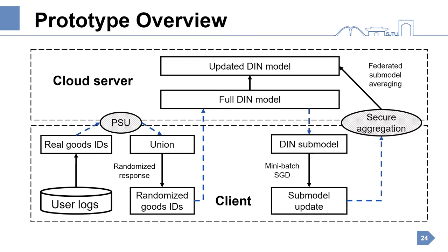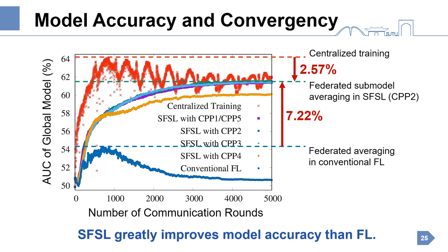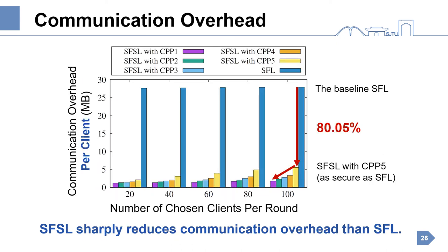We next look at some major evaluation results. First, it's about model accuracy and convergency. Compared with federated learning, which diverges in the end, our SFSL greatly improves the best AUC by roughly 7.2%. Compared with ideal centralized training, the best AUC of our SFSL decreases by only 2.5%. Second, it's about communication overhead. At the same privacy level as the baseline, our SFSL reduces roughly 80% of communication overhead on both the client and the cloud server sides.